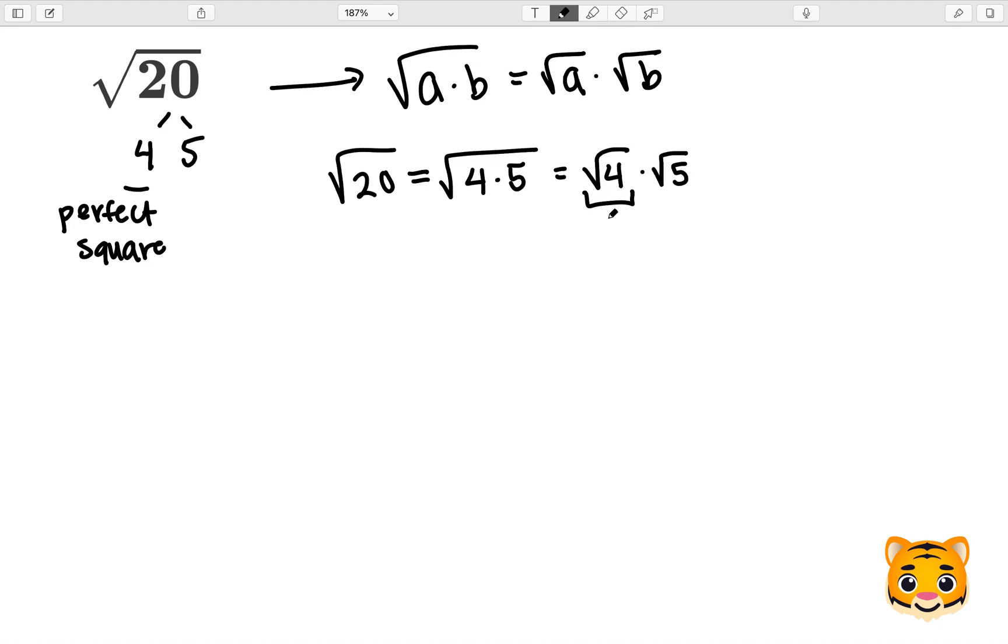Now we can see that the square root of 4 is 2 because 2 times 2 gives us 4. We can then rewrite the square root of 20 as 2 times the square root of 5. This is our simplified version.